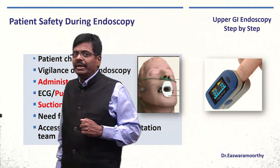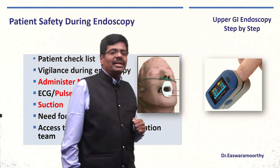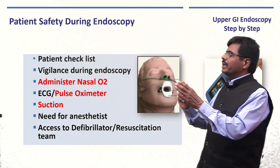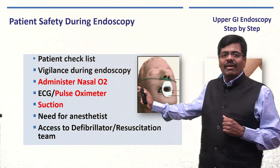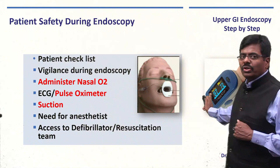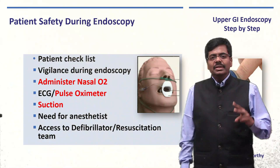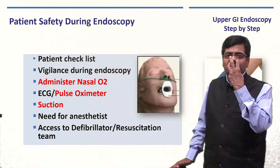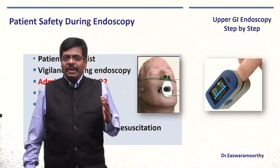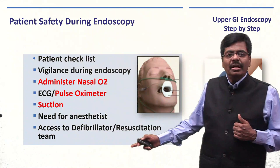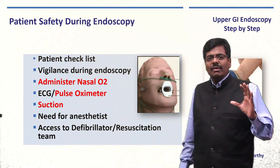For patient safety during the procedure, always be vigilant — keep an eye on the patient even while watching the monitor. Administer nasal oxygen and use a pulse oximeter; ideally attach ECG leads for patients with ischemic heart disease. Keep two suctions ready — one for endoscopy, one for oral suction. For high-risk patients, foreign body cases, or children, have an anesthetic standby. Always have the resuscitation team and defibrillator accessible.